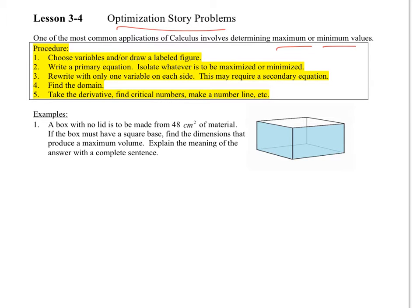So our procedure: we want to choose variables and/or draw a labeled figure. Write the primary equation. Primary equation is the thing that you want to have maximized or minimized. Rewrite with only one variable on each side. This may require a secondary equation. Find the domain. Take the derivative, find critical numbers, make a number line, etc., to figure out if it is a max or a min.